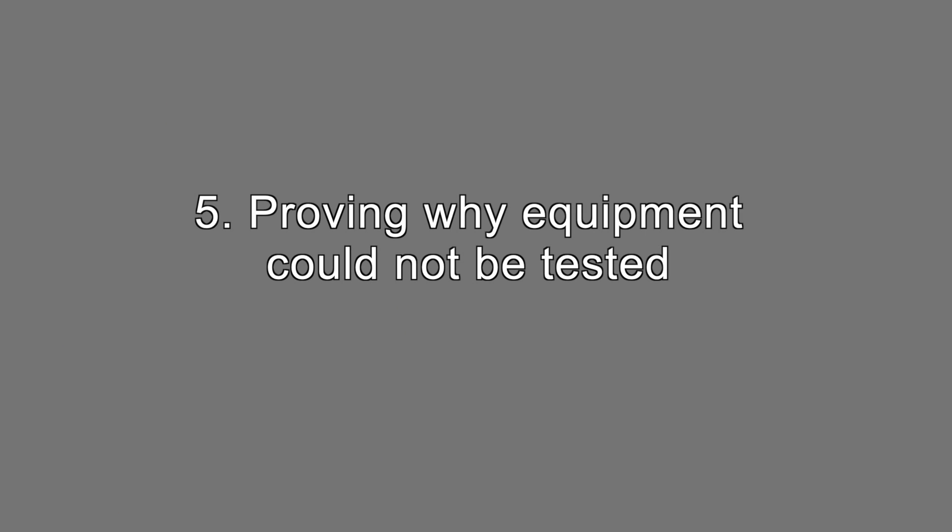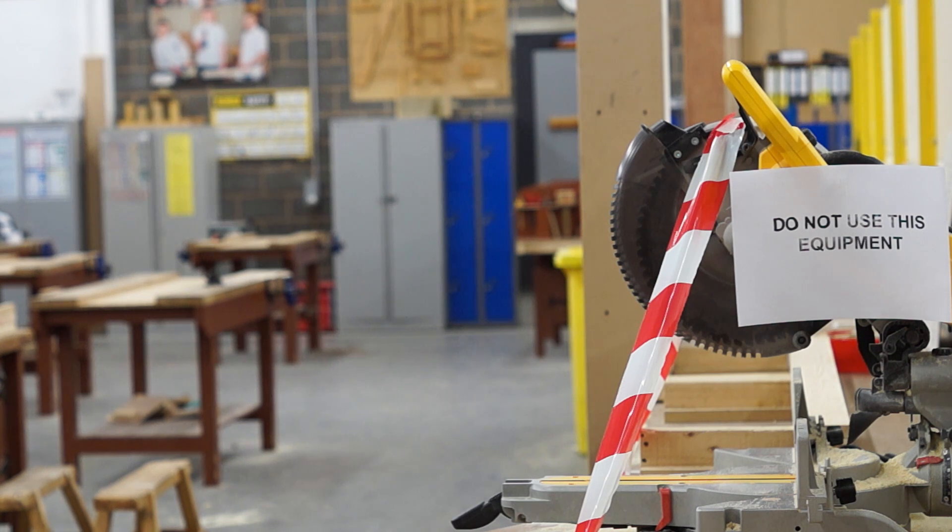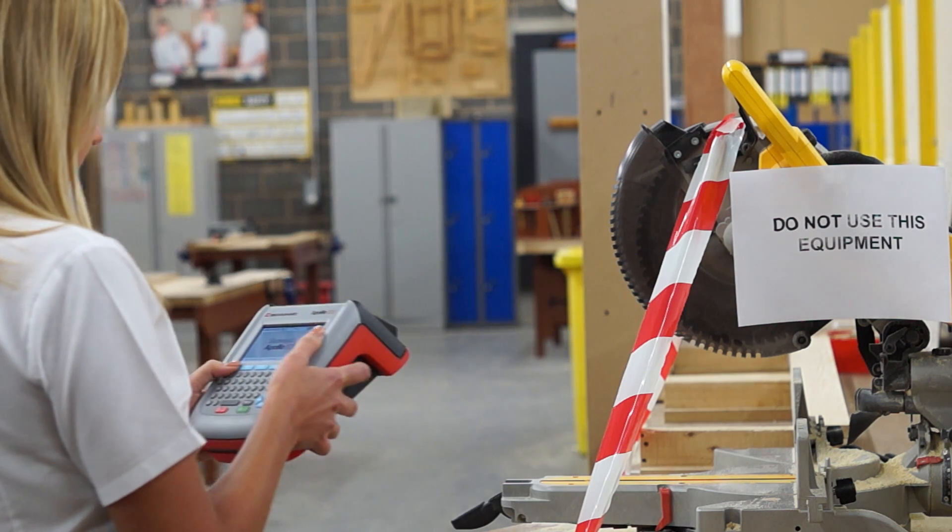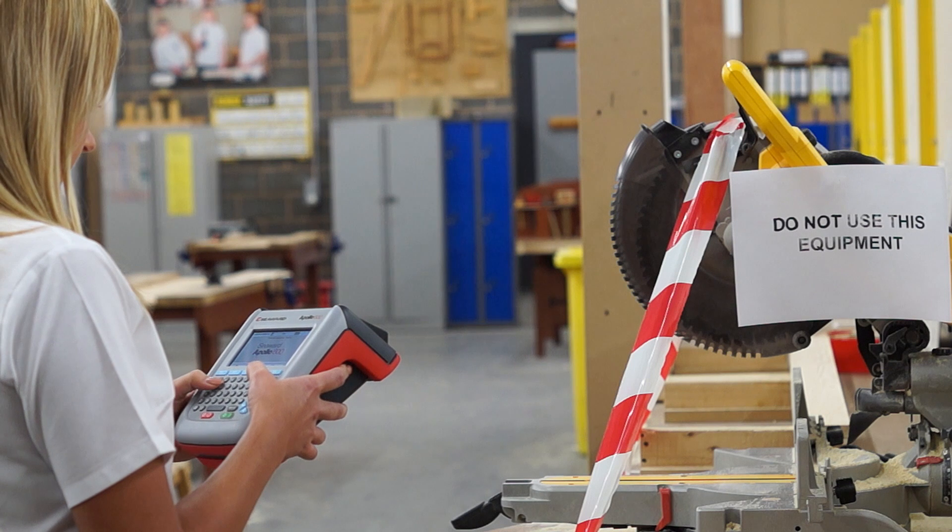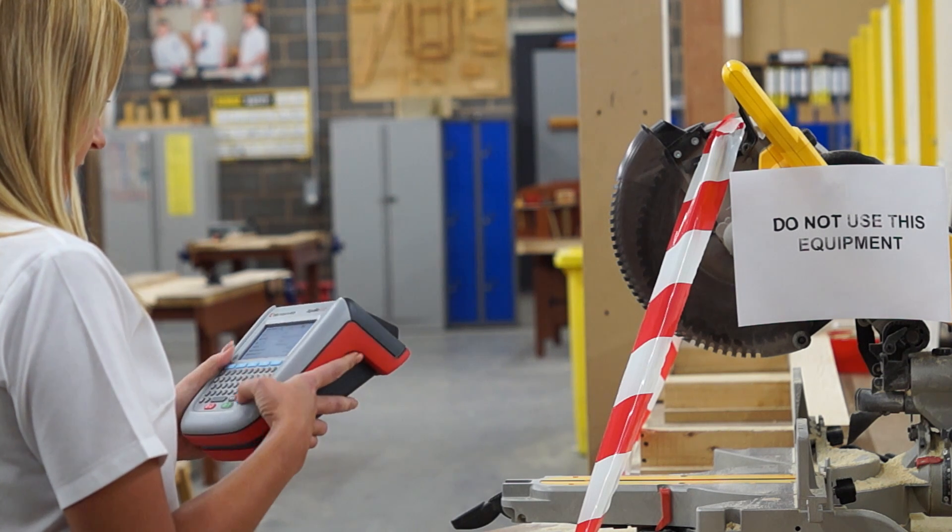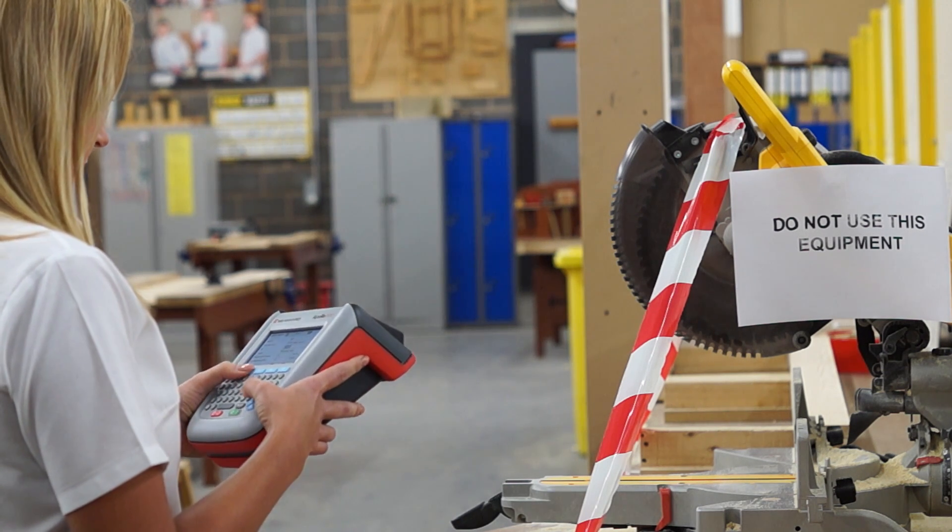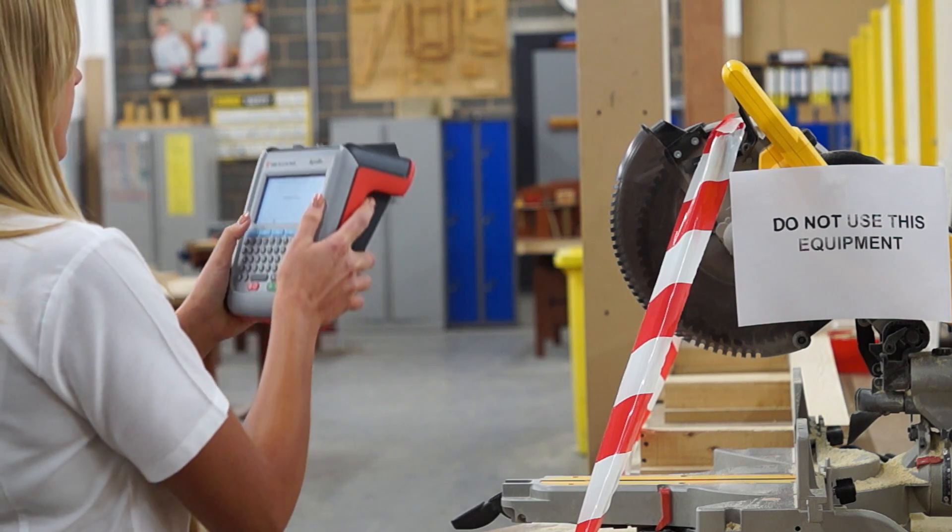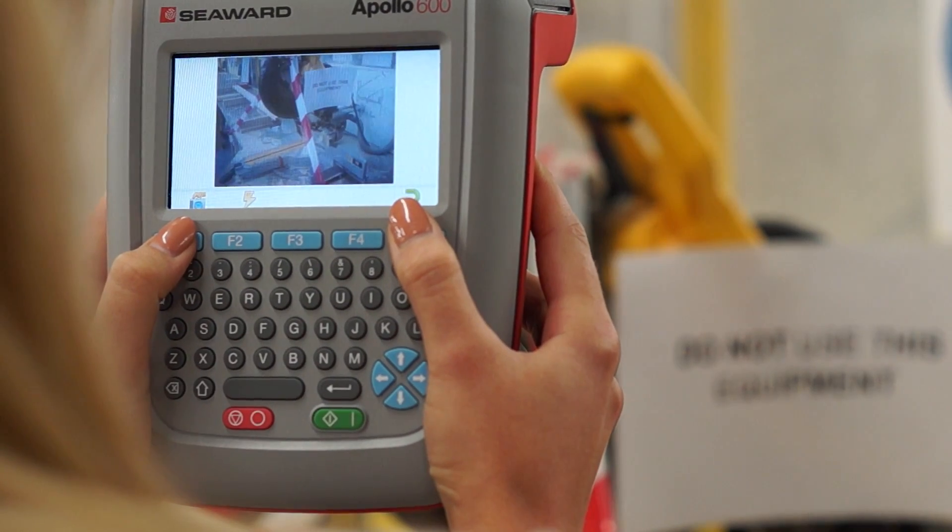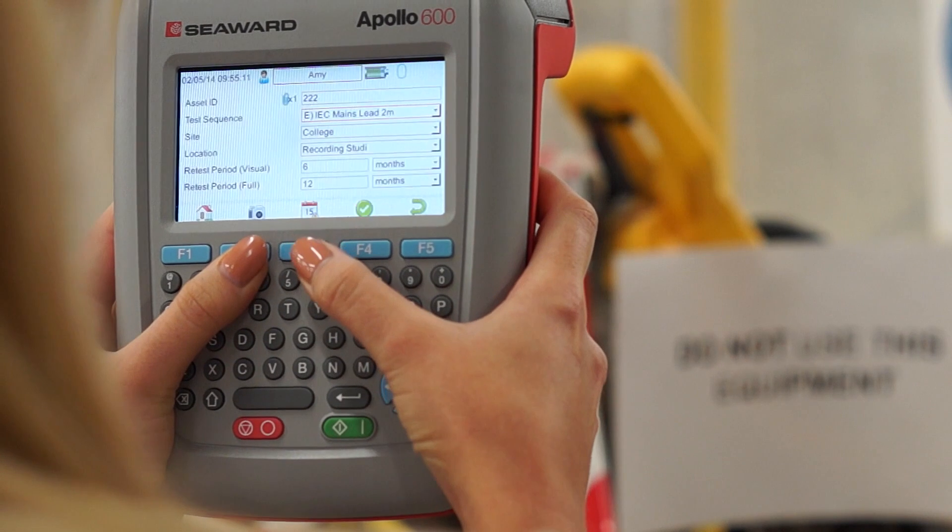Proving why equipment could not be tested. Sometimes when carrying out testing inspections there can be obstructions which prevent you from carrying out the work required, for example an appliance being out of safe reach or which can't be safely isolated. The duty holder may require you to give evidence of why these items were not tested. A photograph is the ideal way to demonstrate this.